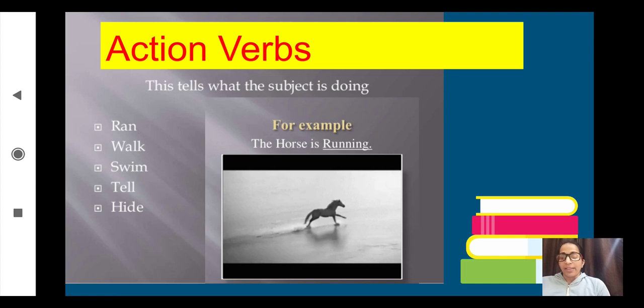It's very easy to identify them because action verbs are those which tell us what the subject is doing. See the example: the horse is running. So what is the action which is taking place? That is run. Who is running? The horse is running. That means horse is the subject here because this action of running is done by the horse. You can see a few more examples of verbs: ran, walk, swim, tell, hide.